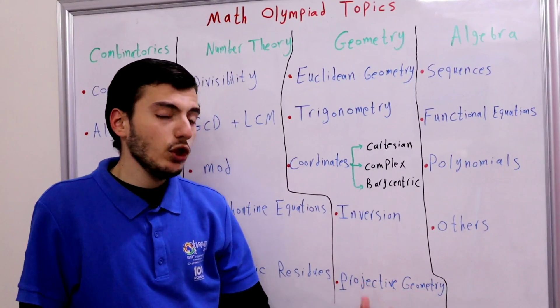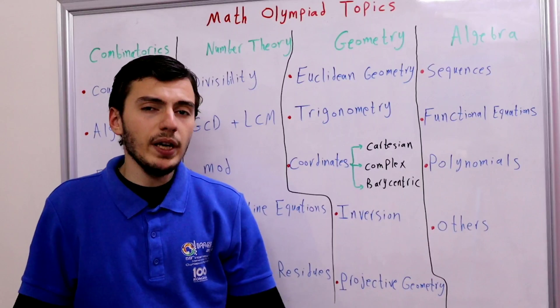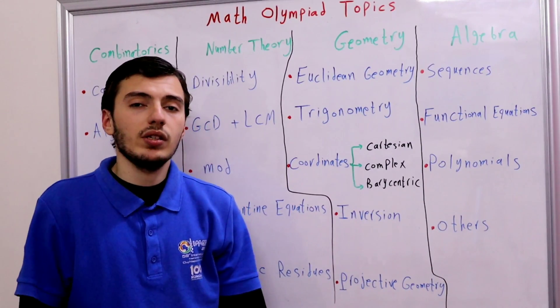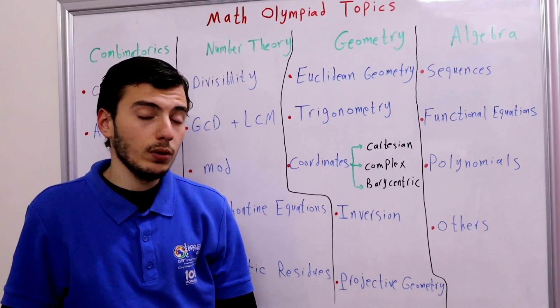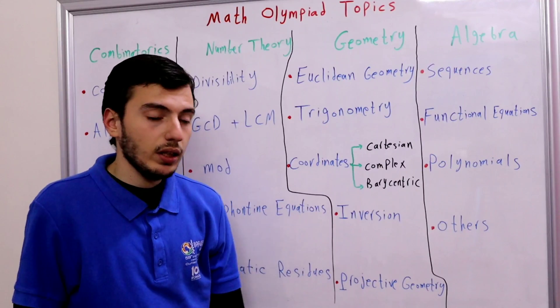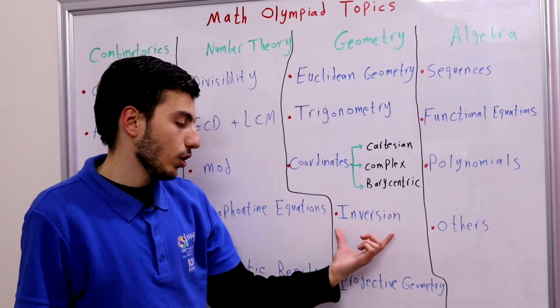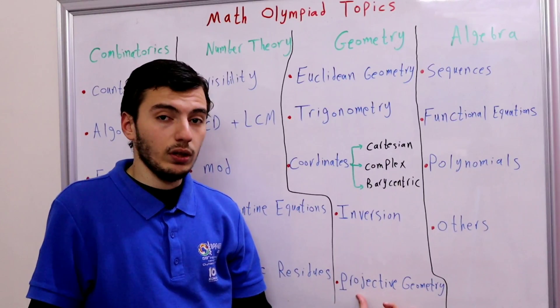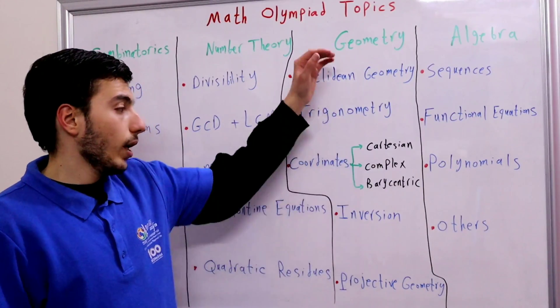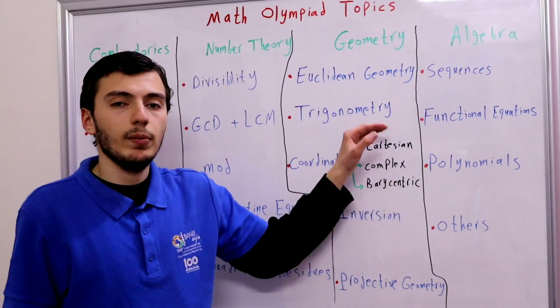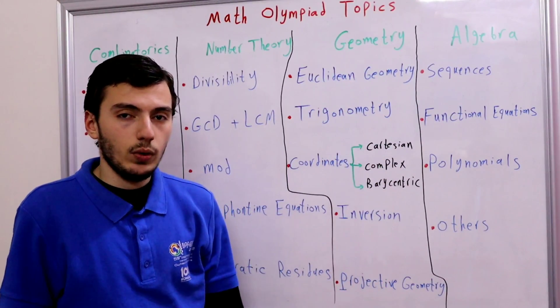So that is inversion. What about projective geometry? Well if you are preparing for Iranian geometry olympiad you really need this because there are always one problem or two problems that can be solved using projective geometry and it is really similar to inversion. And of course it is really important in IMO as well. So that is all about geometry. You should be very strong at Euclidean geometry and you should be familiar with these other tools as well.